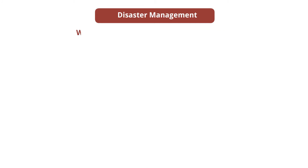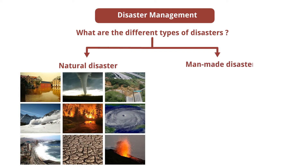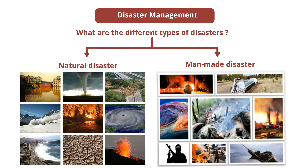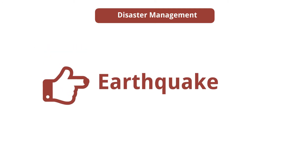The next question is: what are the different types of disasters? The different types of disasters are natural disaster and man-made disaster. Last year, we studied various natural calamities or natural disasters. Now, we are going to study about earthquake, fire, and landslides. Let us start with the first topic, i.e., earthquake.